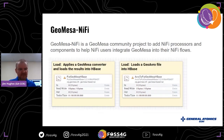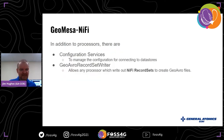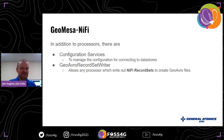We also have a GeoMesa converter library that helps map whatever input data you have into simple features. This is an example of one of the transformations we support: you can use those converter definitions and libraries to turn whatever comes in into GeoAvro — a GeoMesa-modified Avro file format to represent simple features in Avro. We also have processors that put data directly into a back-end like HBase, with processors for each of the back-ends.